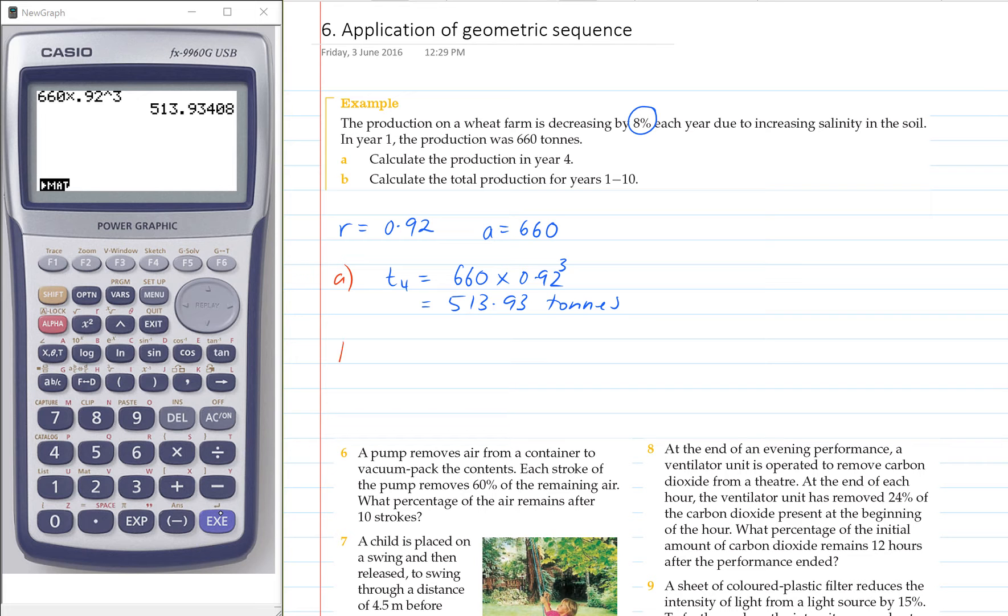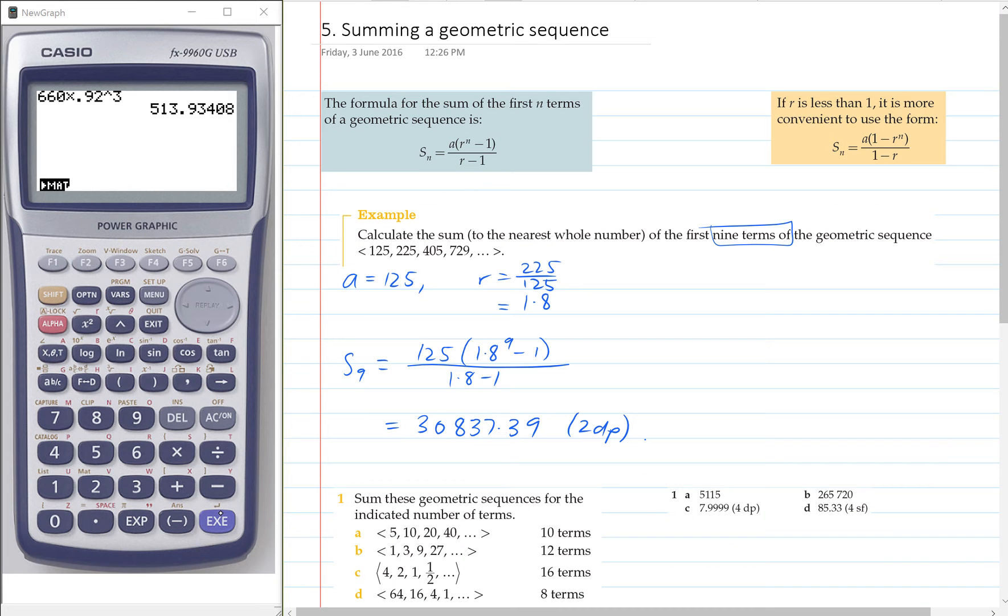Okay, so for part B, it's asking us to calculate the total production for years 1 to 10. So that's asking us to sum for the first 10 years. And we may just want to quickly go back and check our sum formula. So we're using this formula here.